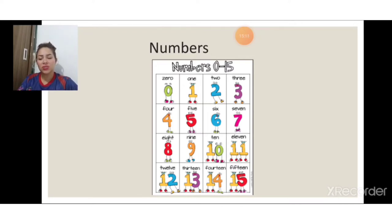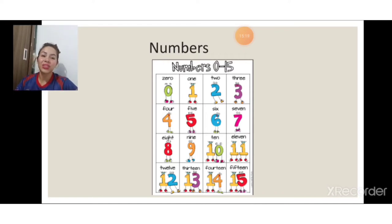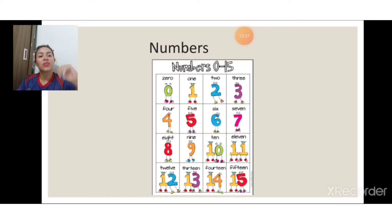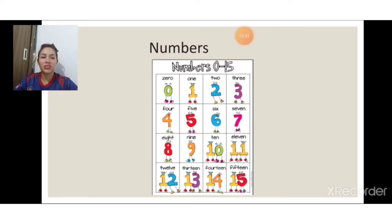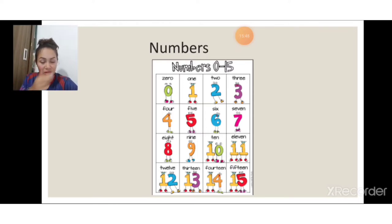Vocês assistem Stranger Things? Tem uma personagem que se chama Eleven — eleven, 11. Então é só lembrar dela. Vamos contar novamente? Let's go, everybody: zero, 1, 2, 3, 4, 5, 6, 7, 8, 9, 10, 11, 12, 13, 14, 15. Isso mesmo, muito bom, guys! A gente fez a contagem dos números, revisamos até o 15. No livro, ele trabalha de 1 a 10, na página 17, onde tivemos que escrever os números em inglês.